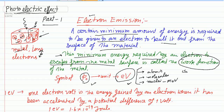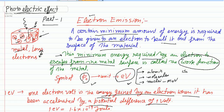One electron volt is the energy gained by an electron when it has been accelerated by a potential difference of one volt. That energy is basically one electron volt, and it is equal to 1.6 × 10⁻¹⁹ joule.